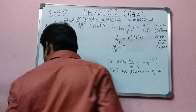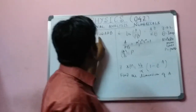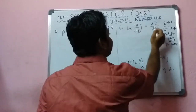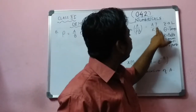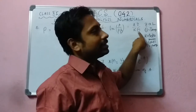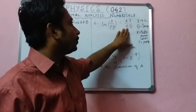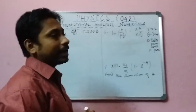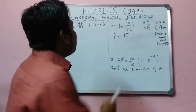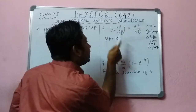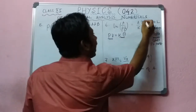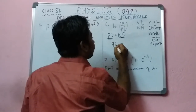Now if they ask for the constants a and b, we use the term a·z divided by k·theta. Theta means temperature in kelvin. To find the dimension of k (Boltzmann constant), we use the ideal gas equation: pV = kT. So the dimension of k·theta equals p·V.